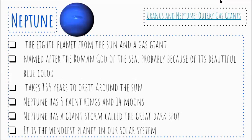Neptune is the eighth planet from the sun and is also a gas giant. It is named after the Roman god of the sea, probably because of its beautiful blue color. It takes 165 years to orbit around the sun. Neptune has five faint rings and 14 moons. It has a giant storm called the Great Dark Spot and it is the windiest planet in our solar system. And now we're going to watch a short video about Uranus and Neptune.